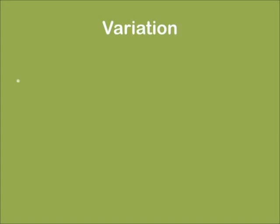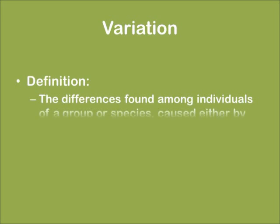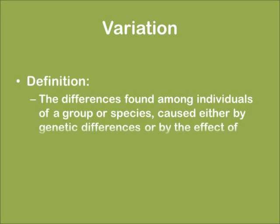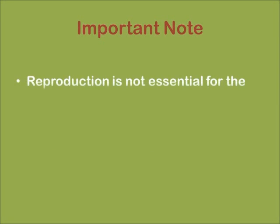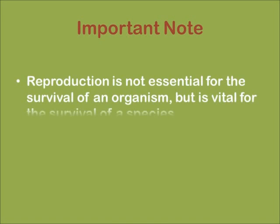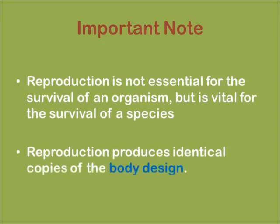Coming to variation, the differences found among individuals of a group or species, caused either by genetic differences or by the effect of environment or genes, is known as variation. An important note: reproduction is not essential for the survival of an organism, but it is vital for the survival of a species. Reproduction produces identical copies of the body design.